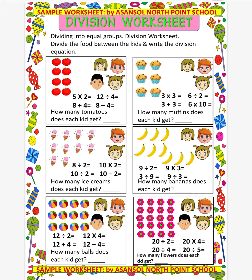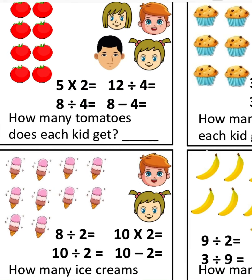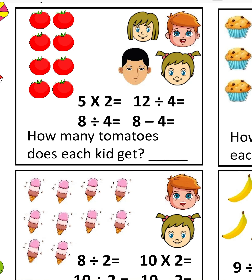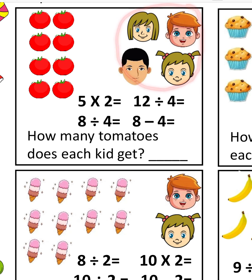Let us take a few examples. You can see here that few tomatoes are there — 1, 2, 3, 4, 5, 6, 7, 8. So 8 tomatoes are there and there are 4 children. If we divide these 8 tomatoes among 4 children, then how many tomatoes does each kid get? We divide 8 by 4 and the result we get is 2, meaning each kid gets 2 tomatoes.